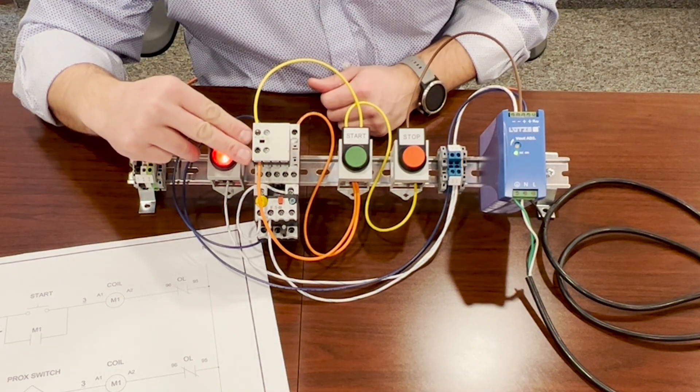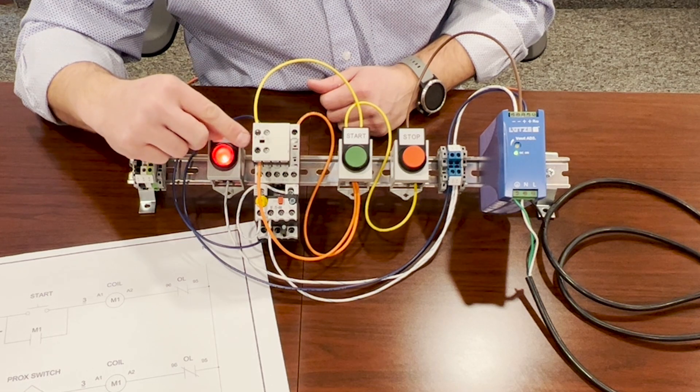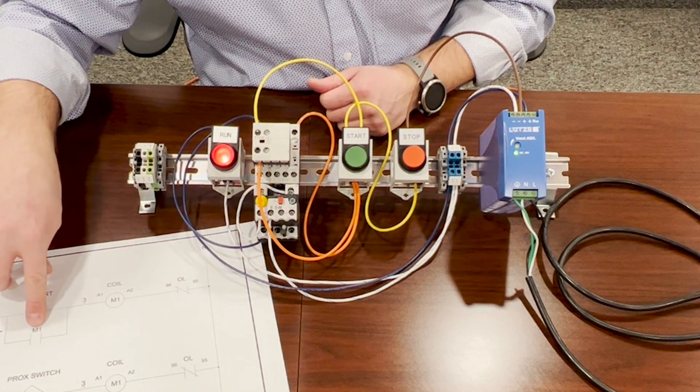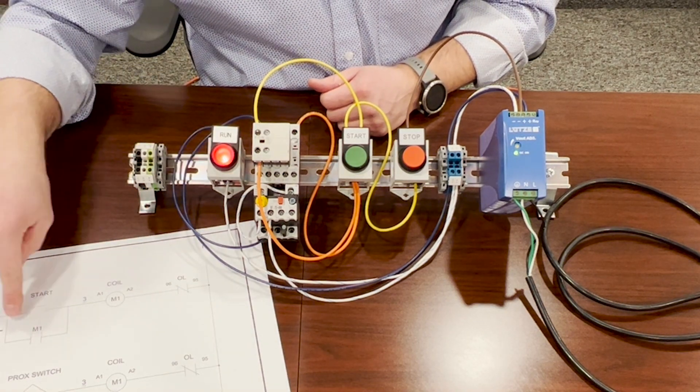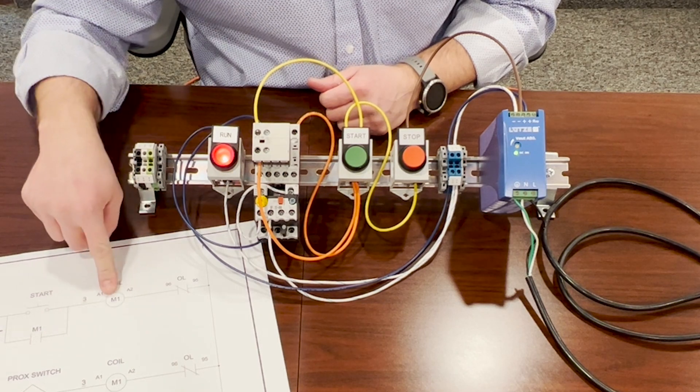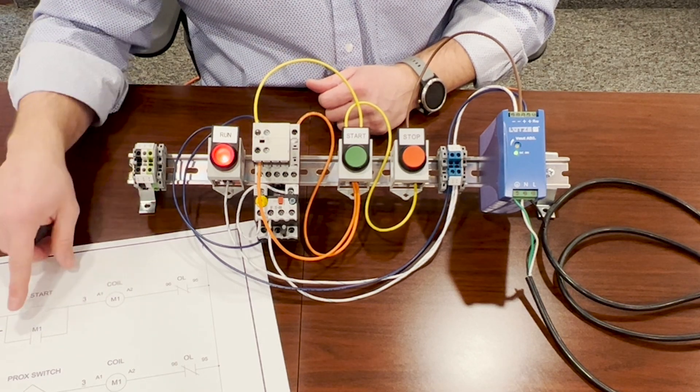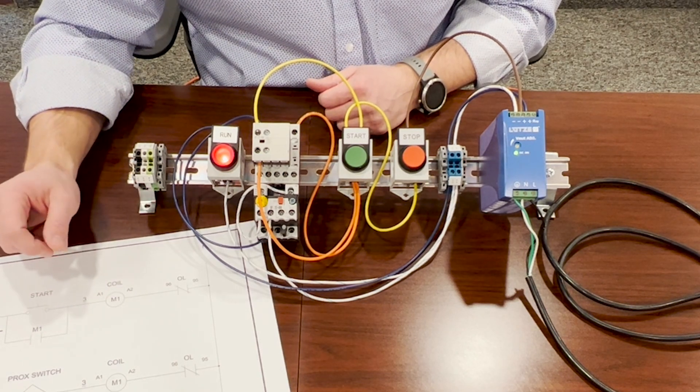So this normally open contact is now closed. That would be this one. And this is what is actually holding power to the coil. It's kind of a holding circuit or a latch.